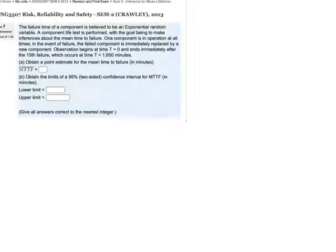One component is in operation at all times. In the event of a failure, the component is immediately replaced by a new one. The observation begins at time t equals 0 and ends immediately after the 15th failure. So it's a failure terminated test, which occurs at t equals 1650 minutes.